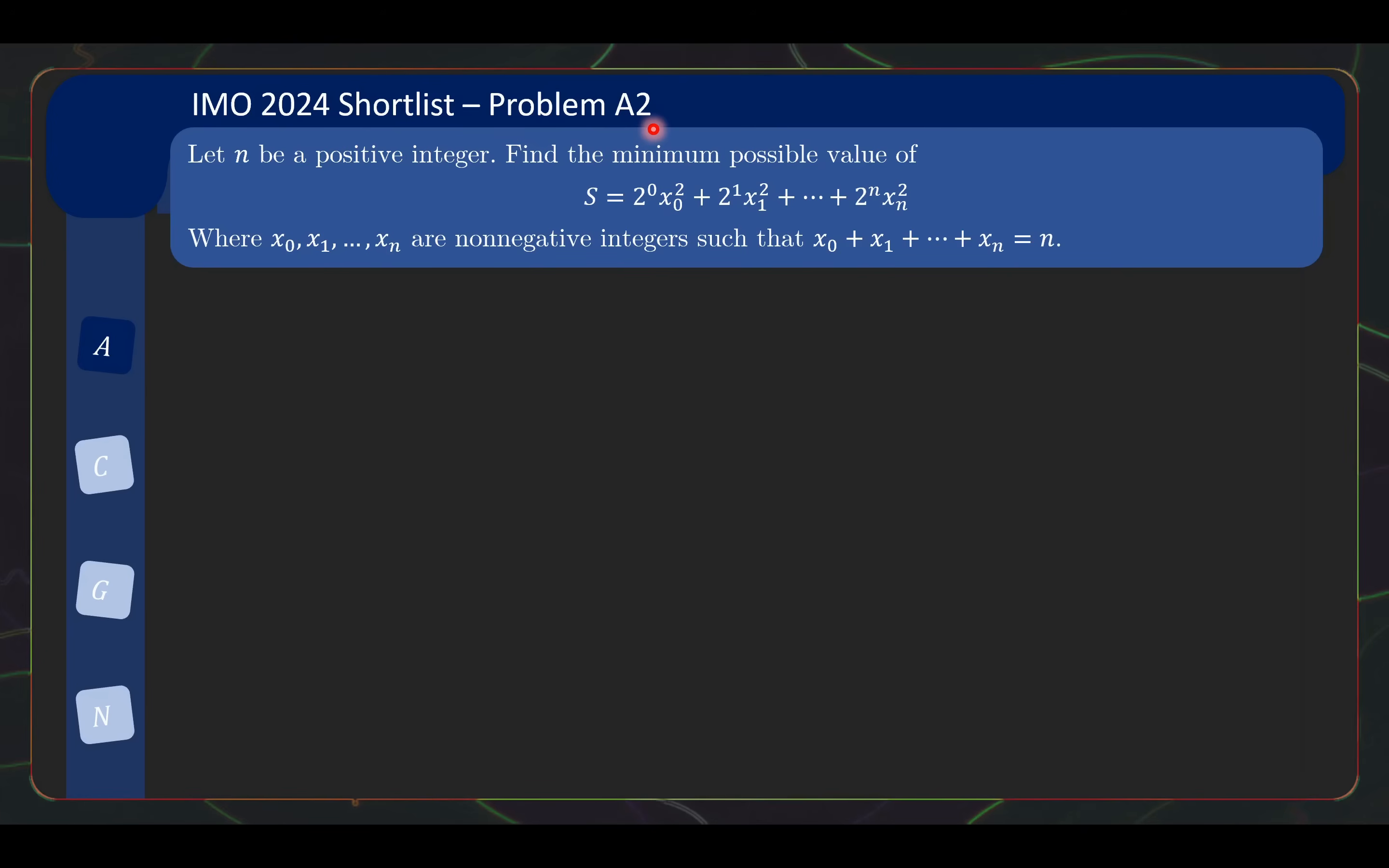This is problem A2 from the IMO 2024 shortlist. As problem A2, you can expect it to be a relatively easy algebra, but still, this will be interesting and full of surprises. Let n be a positive integer. Find the minimum possible value of S = 2^0 x0^2 + 2^1 x1^2 + 2^2 x2^2 + ... + 2^n xn^2, where x0...xn are non-negative integers such that they sum to n.